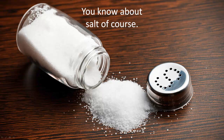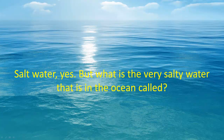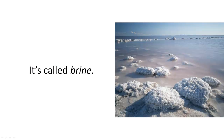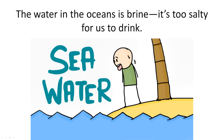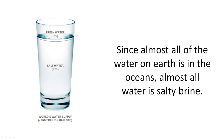You know about salt, of course. Do you know what water is called when you put salt in it? Salt water, yes. But what is the very salty water that is in the ocean called? It's called brine. The water in the oceans is brine. It's too salty for us to drink. Most of the water on land, in lakes and rivers, is fresh, not salty. Since almost all of the water on Earth is in the oceans, almost all water is salty brine.